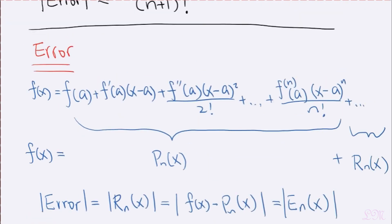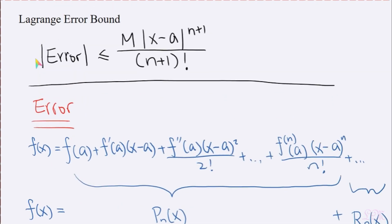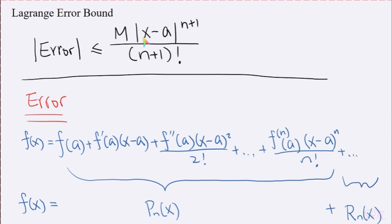Alright, so going back to the formula here, we have pretty much talked about everything. We talked about the error. We talked about the M. We also just talked about the a and x. And n here is just the degree of the polynomial that you're using to approximate f of x.